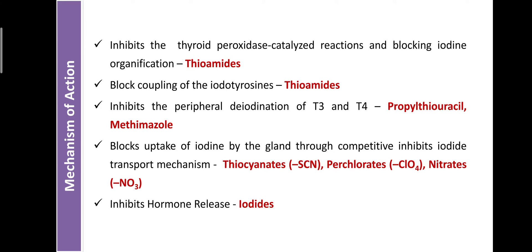Summary of mechanisms of antithyroid drugs: First, inhibit thyroid peroxidase-catalyzed reaction by blocking iodine organification — example: thioamides. Second, block the coupling of iodotyrosines — by thioamides. Third, inhibit the peripheral deiodination of T4 to T3 — by propylthiouracil and methimazole. Fourth, drugs like thiocyanates, perchlorates, and nitrates block the uptake of iodine by the gland through complete inhibition of the iodide transport mechanism. Fifth, inhibit the release of hormone by targeting the lysosomal enzyme — by organic iodides and iodides.